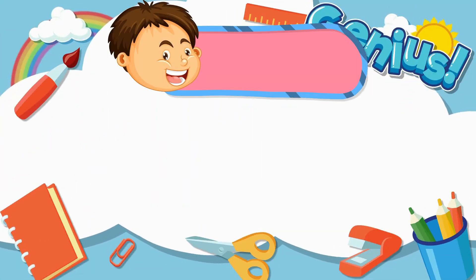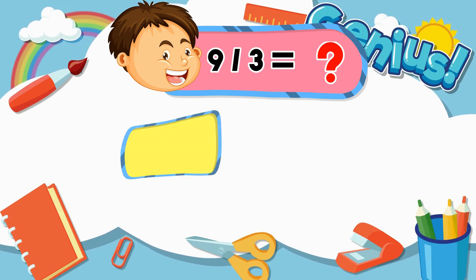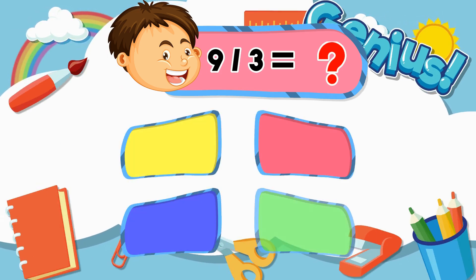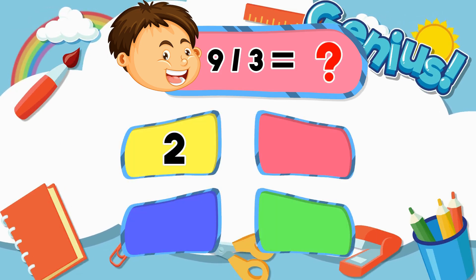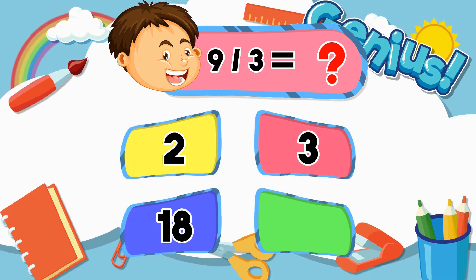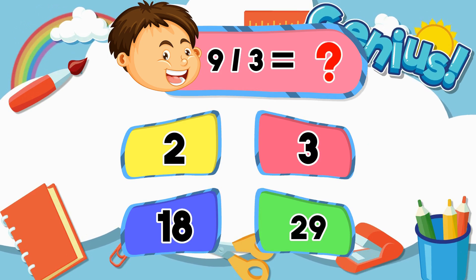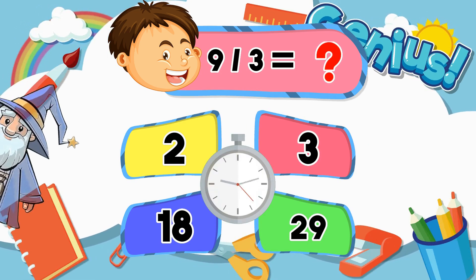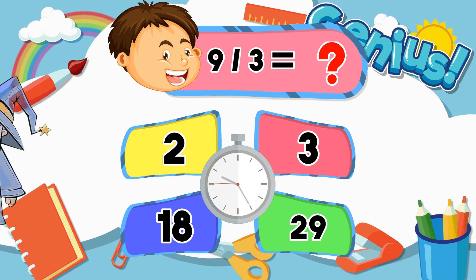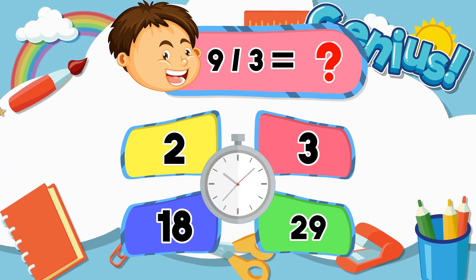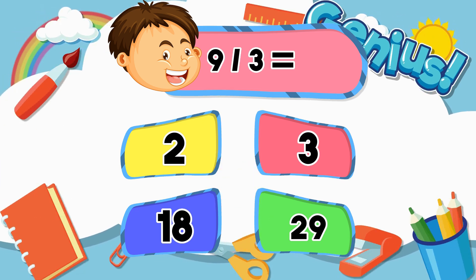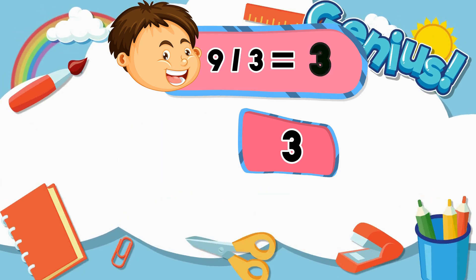What is nine divided by three? Two. Three. Eighteen. Twenty-nine. Three.